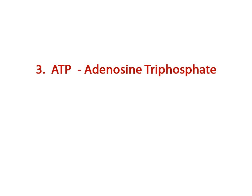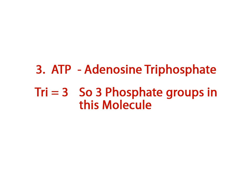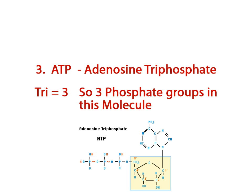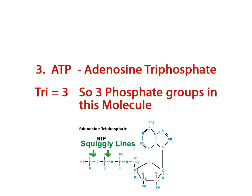The name of this molecule tells us something about its structure. The prefix tri means three, so the name tells us that there are three phosphate groups in this molecule. The three phosphate groups are attached to one sugar and a single nitrogenous base. Notice the squiggly lines between the phosphate groups — these symbols represent high energy bonds between the phosphate groups. Whenever you see three phosphate groups with these squiggly lines between them, you know it is referring to a molecule called adenosine triphosphate.